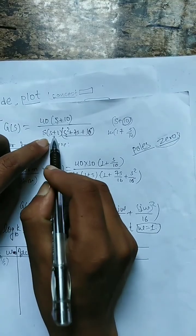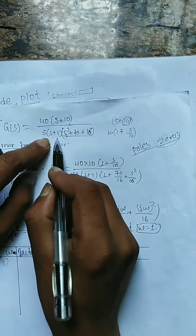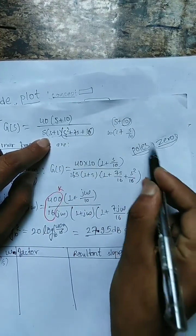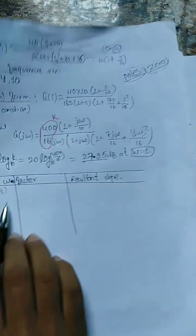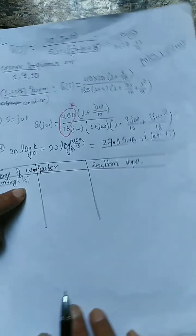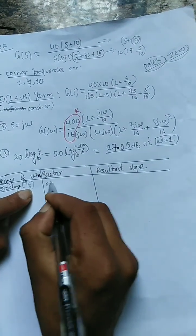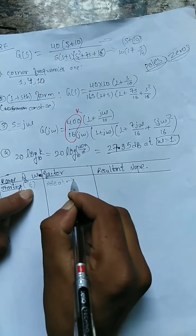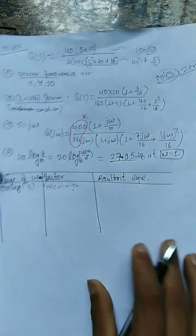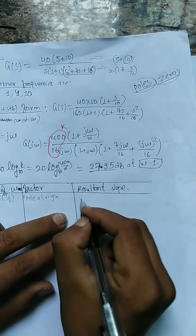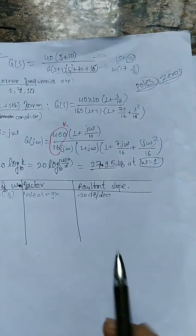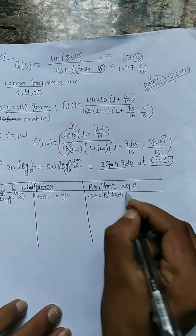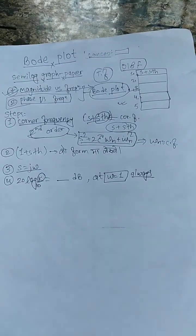The values of s which make the overall transfer function go to infinity are poles. So s = -1 and s = -2 are poles of the function. These are the pole and zero values.